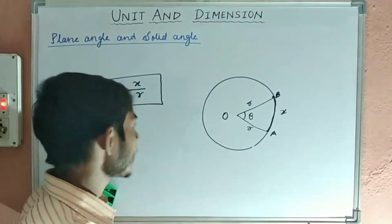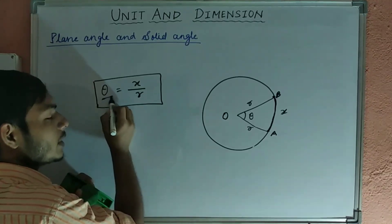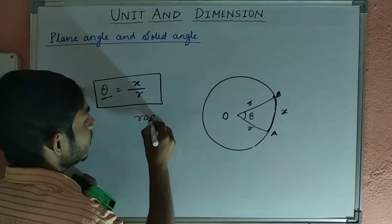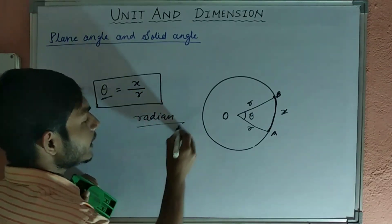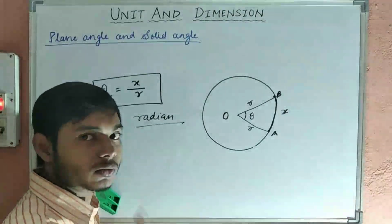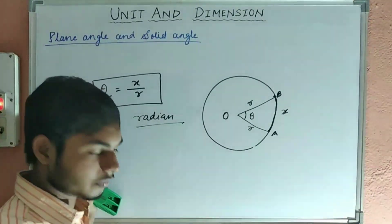The unit in which we can write this theta is radian, R-A-D-I-A-N. Now, how can we define as 1 radian? What is 1 radian?